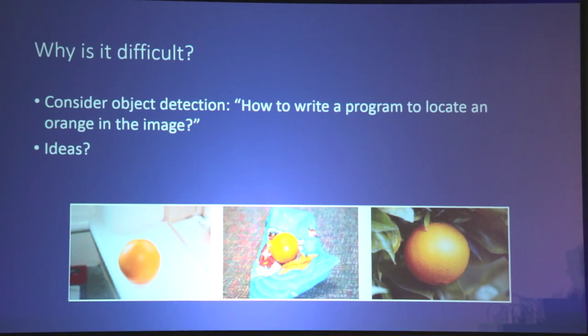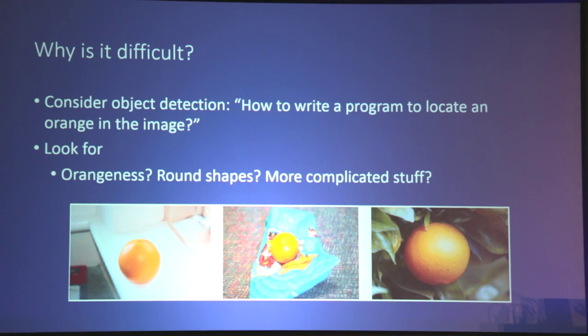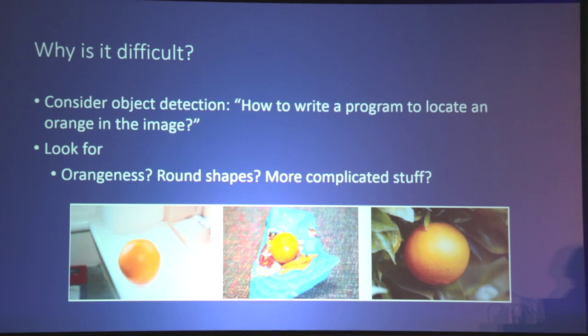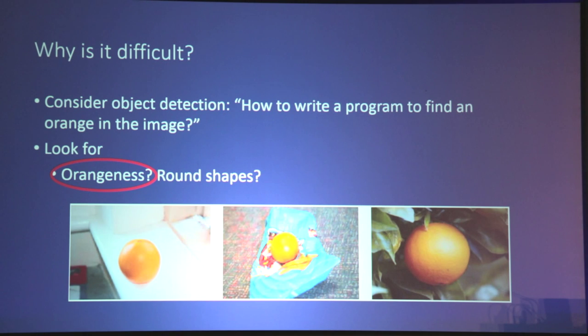Coming back to our original problem, let's think about how we would write a program to find an orange in an image. What ideas might we come up with? Maybe we would look for orange color in the image, or look for a round shape. We're going to focus on the first two — which are orangeness and roundness.